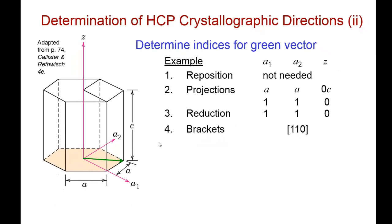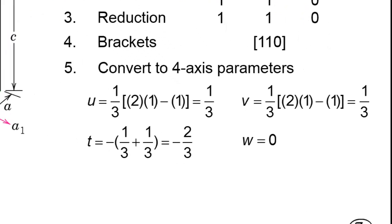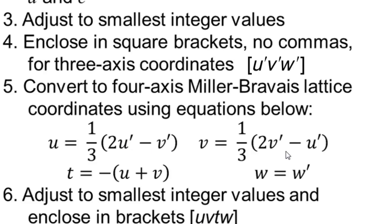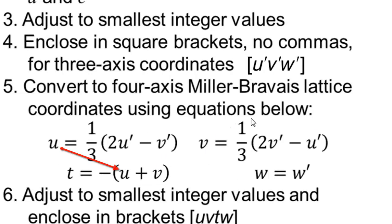Now comes the even more confusing part. We're going to convert it to four axis parameters. So we have instead of U prime, V prime, and W prime, we have U, which is one third of twice, let's go back to our formulas here. U prime minus V prime, V prime, 2V prime minus U prime, and then we have U plus V. Notice that this formula is U plus V, not U prime plus V prime. These are not the same things. T is dependent on us calculating U and V first. A lot of students get that mixed up.